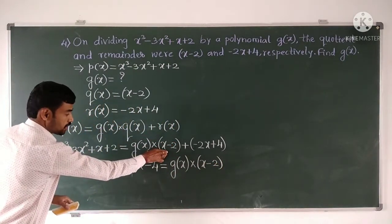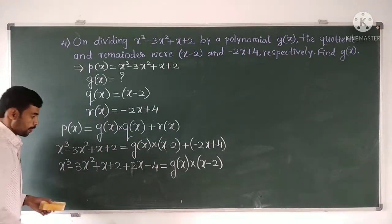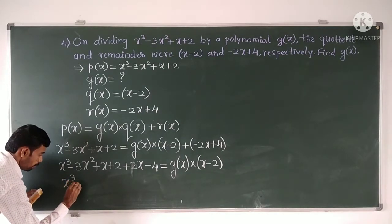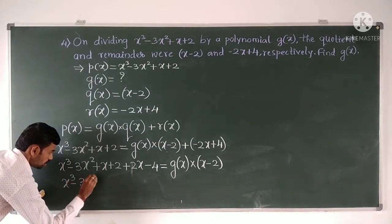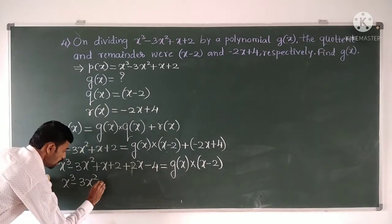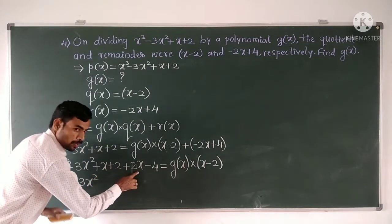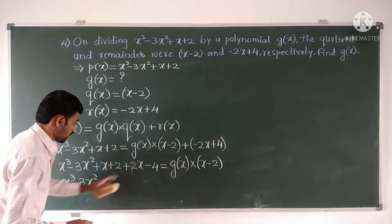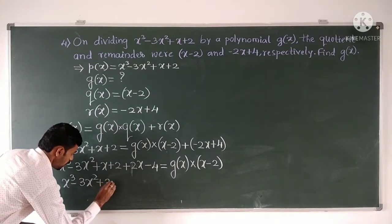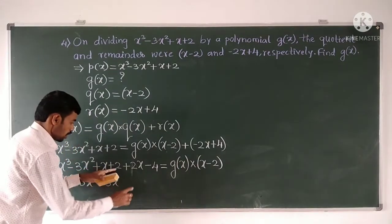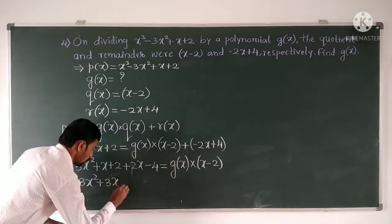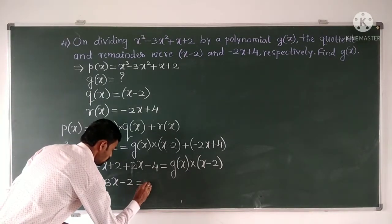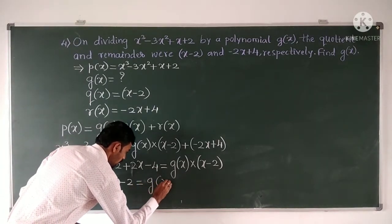Rearranging and simplifying the left-hand side: X³ minus 3X² plus X plus 2X gives plus 3X, and 2 minus 4 gives minus 2. So we have X³ minus 3X² plus 3X minus 2 equals G of X into X minus 2.